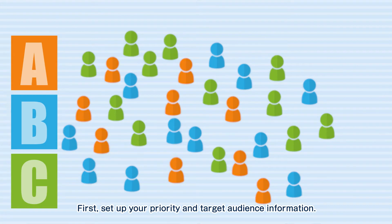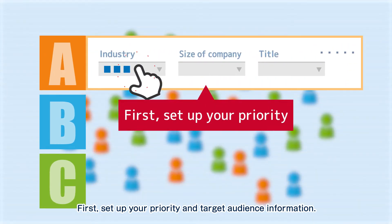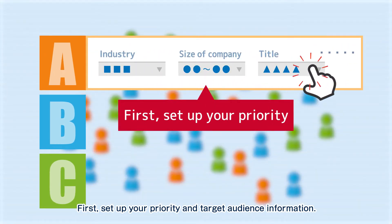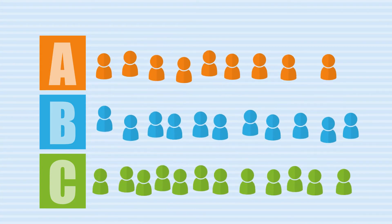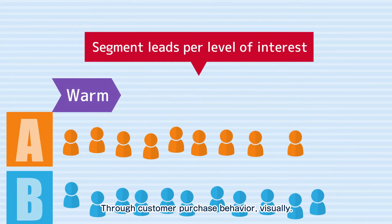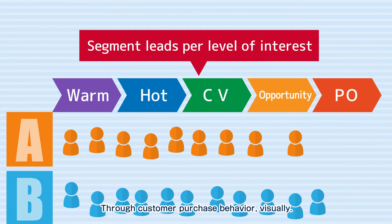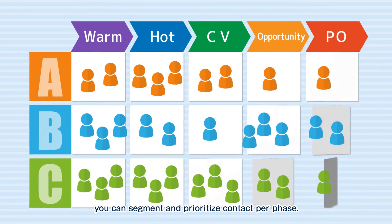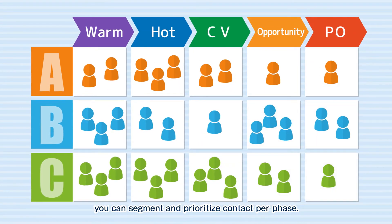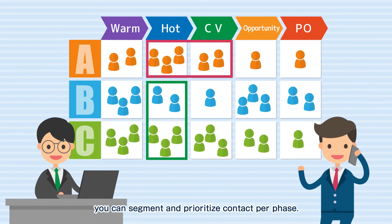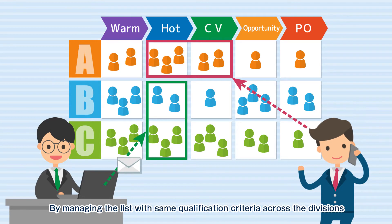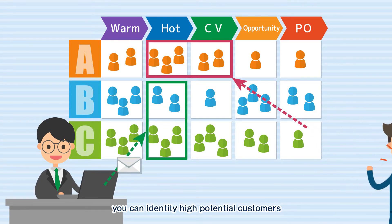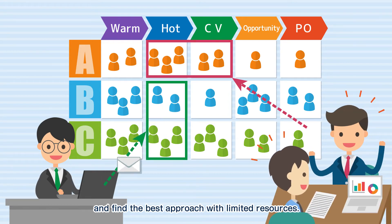First, set up your priority and target audience information. Through customer purchase behavior visually, you can segment and prioritize contacts per phase. By managing the list with the same qualification criteria across divisions, you can identify high potential customers and find the best approach with limited resources.